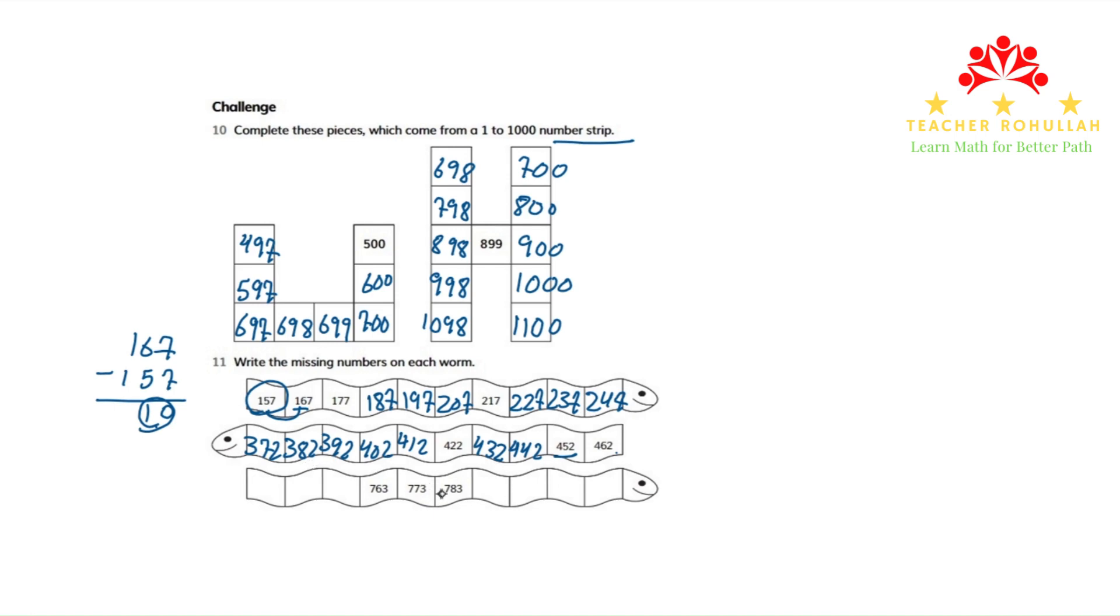But the last one is moving from left to right. Again, we have some three numbers provided over here. To find what is the difference between each number over here, we have to subtract again. So 783 minus 773. I should not forget the subtraction sign. 3 minus 3 is 0, 8 minus 7 is 1.